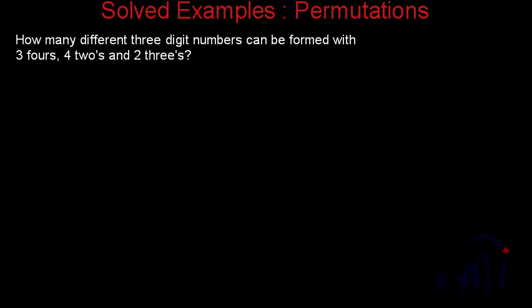So the problem statement says: how many three-digit numbers can be formed with three fours, four twos, and two threes? So suppose this is a three-digit number. And we actually have three digits. We have four, we have two, and we have three. And the number of fours we can use is three, and the number of twos we can use is four, and the number of threes we have is actually two.